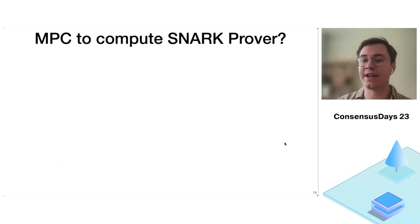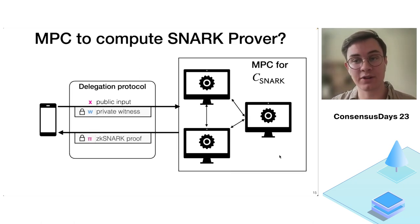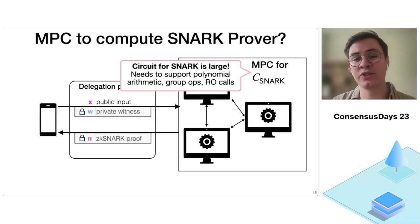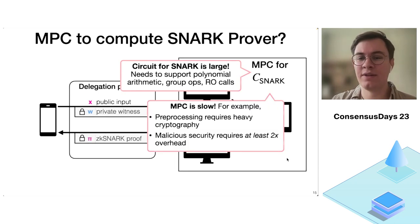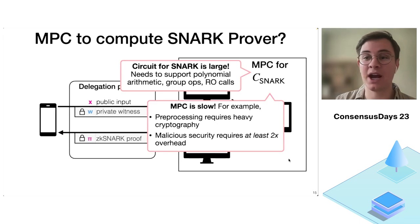The question is: can we take this generic MPC and use it to compute the ZK-SNARK prover? Can the delegator secret share its witness to all the workers, and then they run the MPC that computes the ZK-SNARK? A naive attempt fails for two main reasons. First, the SNARK circuit is very large — you need to support polynomial arithmetic, group operations, and random oracle calls, and naive representations of these are very expensive in SPDZ. Second, MPC is slow in general, and these generic techniques have overhead. I'll focus on the circuit size and how we can reduce it.